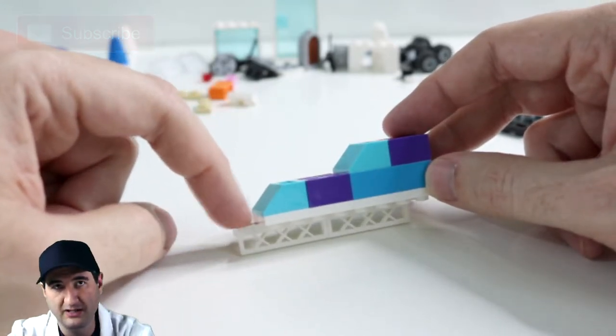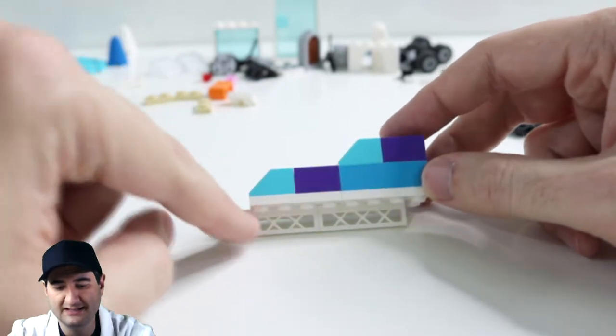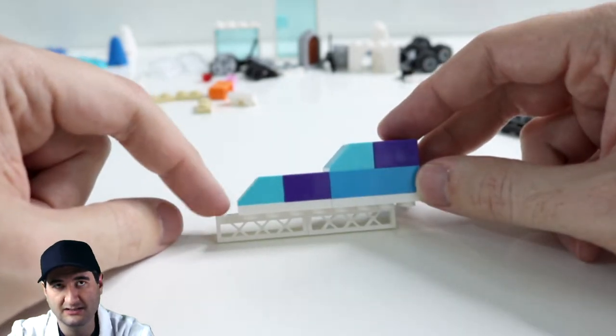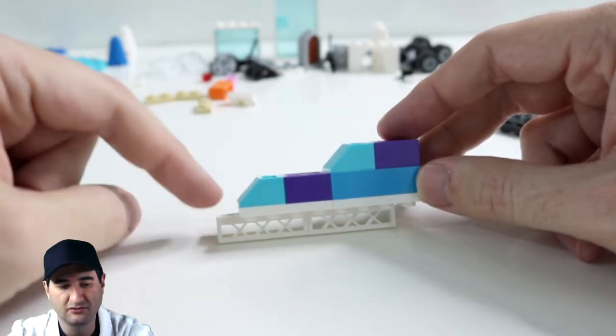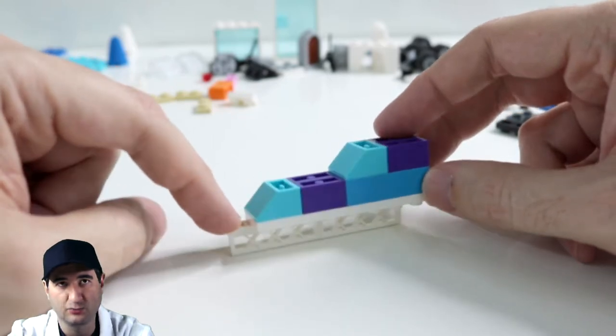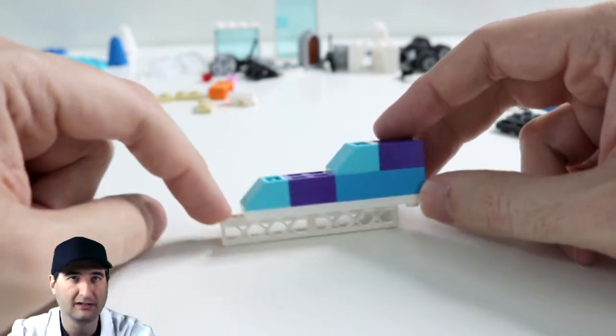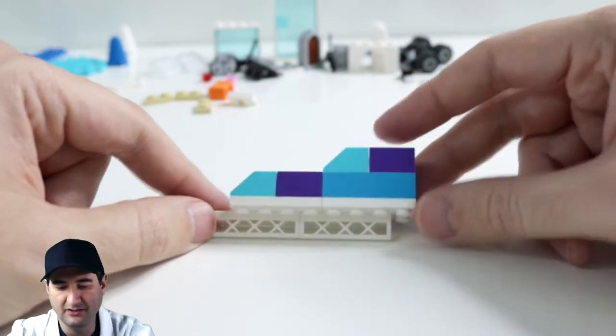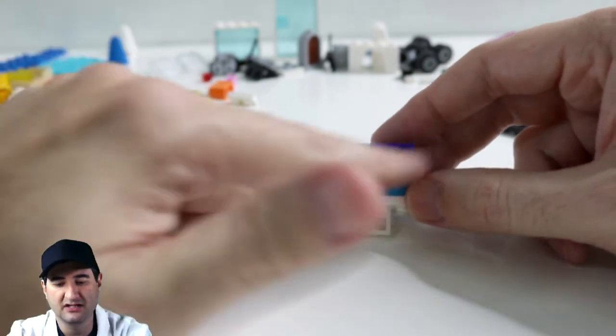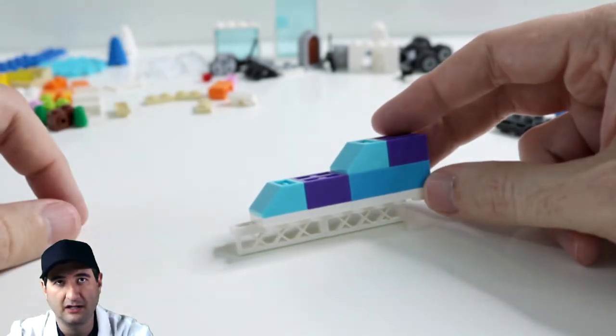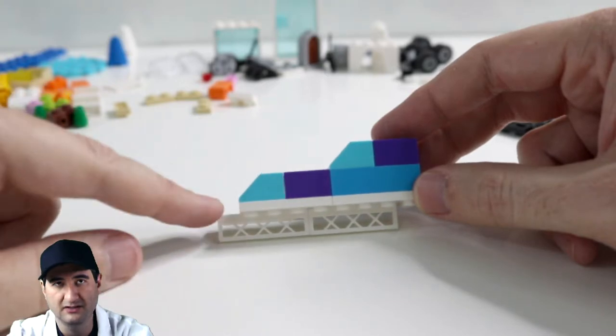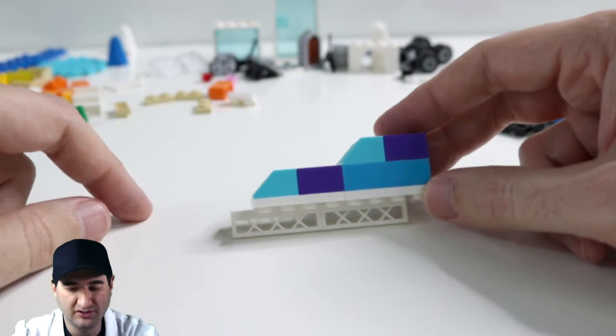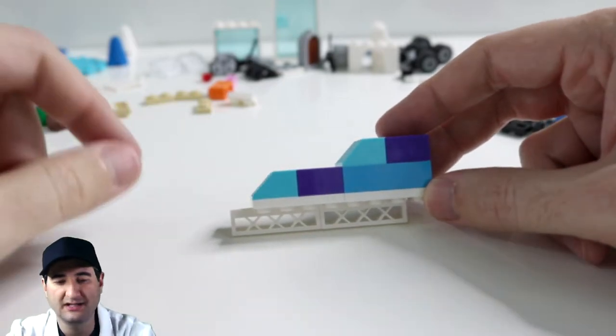See, hockey skates have the blade underneath the boot 100%. Whereas figure skating has this little bit up front. Or also the speed skating skates have that as well. So this looks more like a speed skating skate. Or a figure skating. I think it turned out really well. I like the color scheme. The purples and blues. I think that looks well. The blade itself looks good. We did the whole thing upside down. Which was tricky. It throws my entire orientation off.